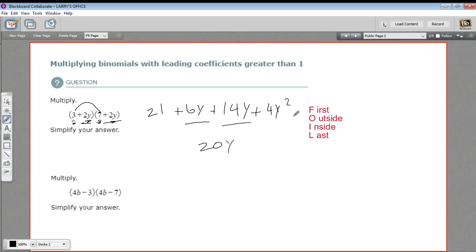And then I think I'm going to write this in descending power order. So we'll start with the highest exponent term first. So this would be 4y squared plus 20y plus 21.